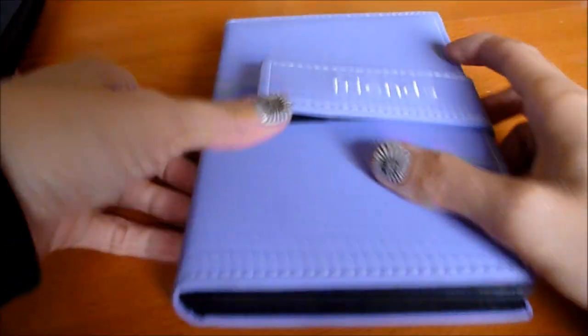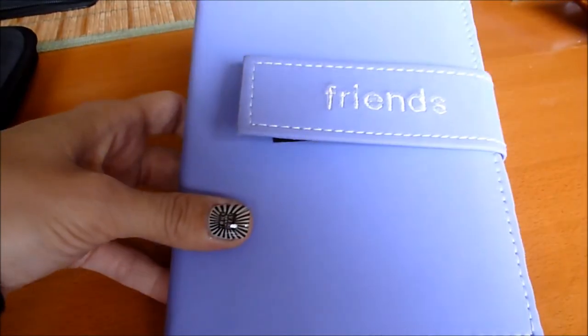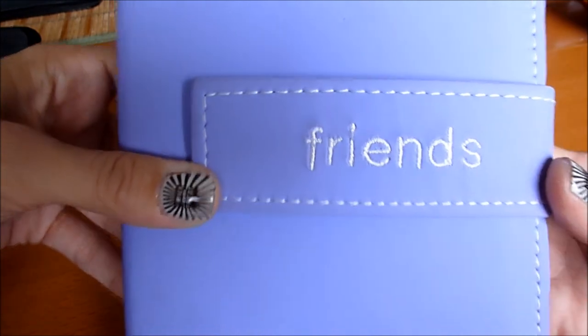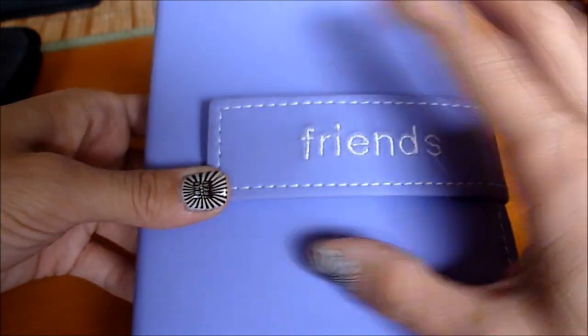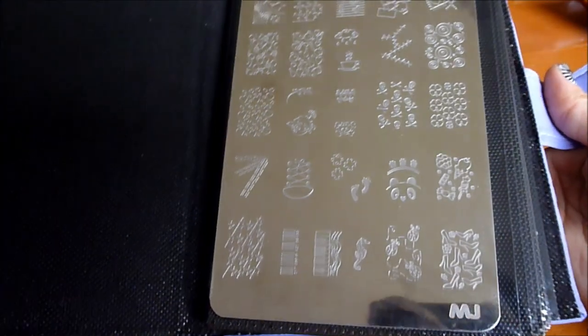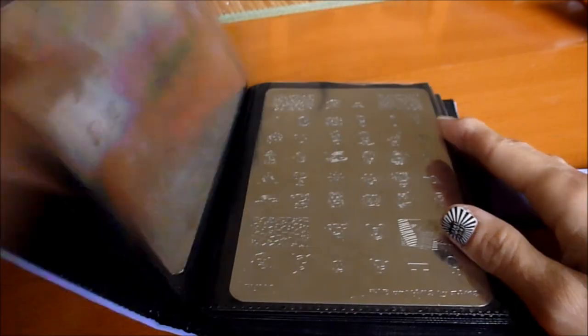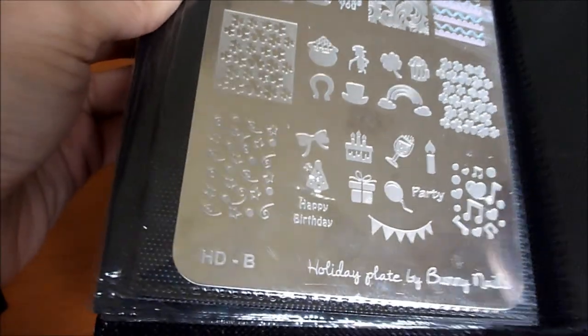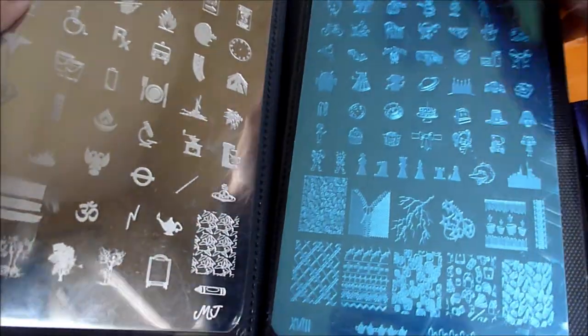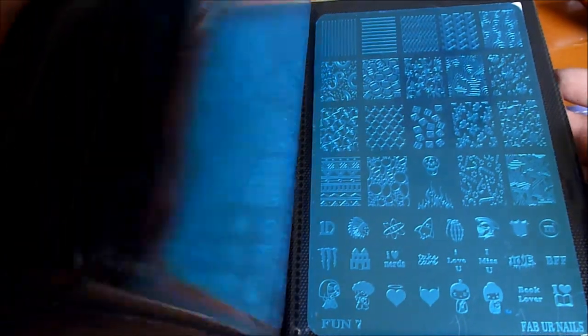The other case I have is actually just a 4x6 photo album. I got this on Amazon for I think like $10. And I use it to store the MJ, the Fun, and the Funny Nails plates. And it fits perfectly. It's pretty heavy, but they fit perfectly.